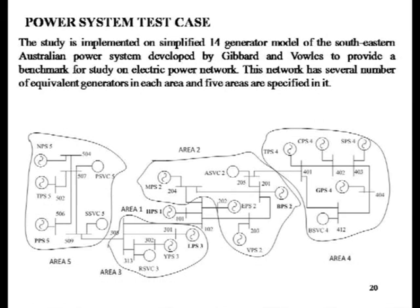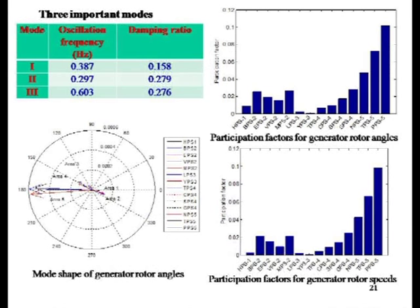Here we have the Australian power system — the Southern Eastern Australian power system — which has 14 generators in five areas. Area one has one generator, area two has four generators, area three has two generators, area four has three generators, and area five has three generators. We performed eigenvalue analysis for this system. For a given operating condition, we did linearization and obtained the Jacobian matrix, then looked into the eigenvalues. Some modes — one, two, and three — are of very low frequency and have very low damping factor.